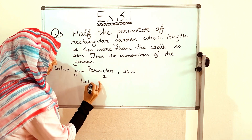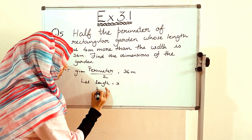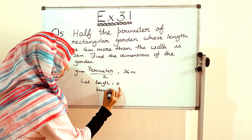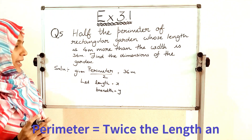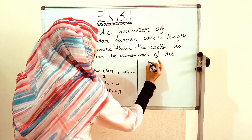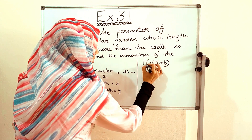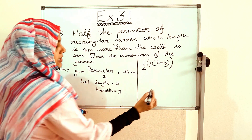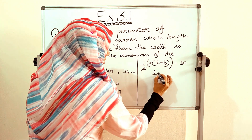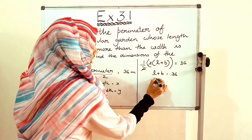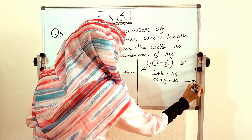Let us state length equal to x and breadth equal to y. The perimeter of a rectangle is 2 into (l + b). Since half the perimeter is given, half of 2(l + b) equals 36. The 2s cancel, giving us l + b = 36. Our l is variable x and b is variable y, so x + y = 36. This is equation number 1.